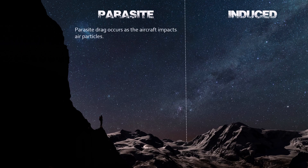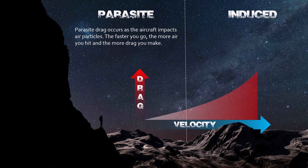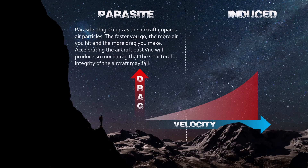Parasite drag occurs as the aircraft impacts air particles. The faster you go, the more air you hit, and the more drag you make. Accelerating the aircraft past VNE will produce so much drag that the structural integrity of the aircraft may fail.